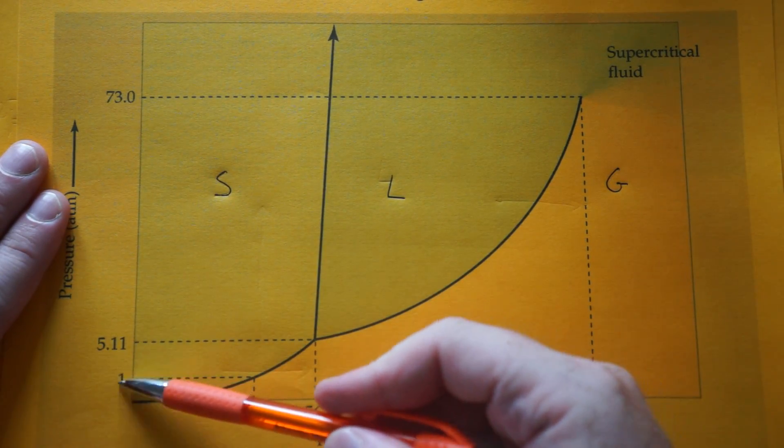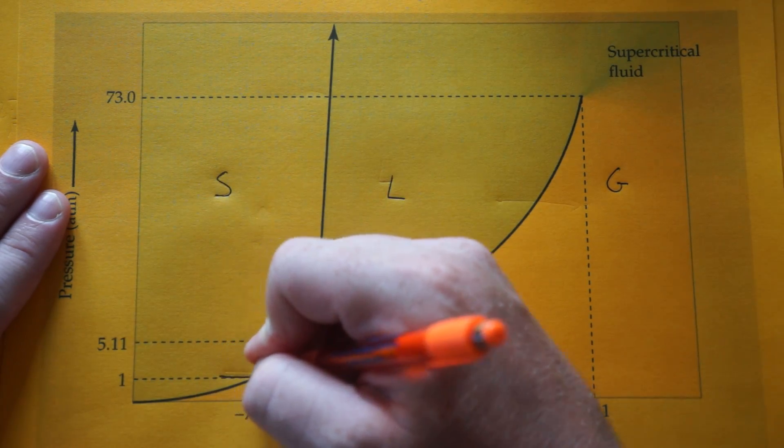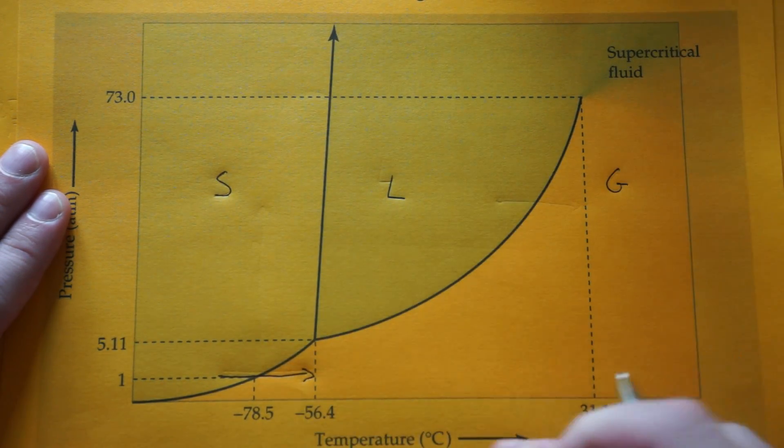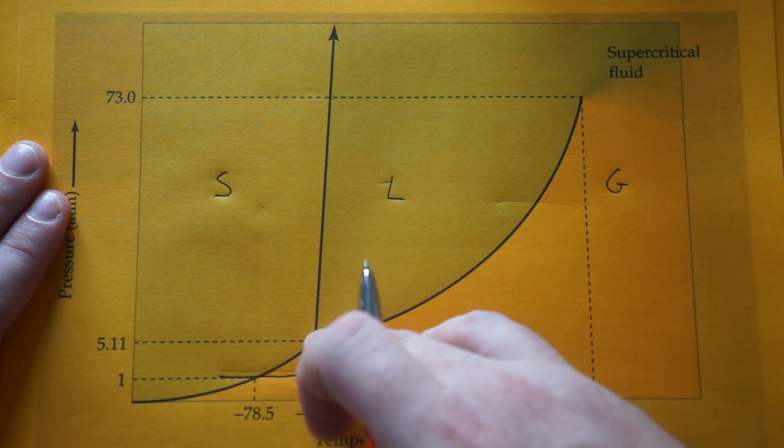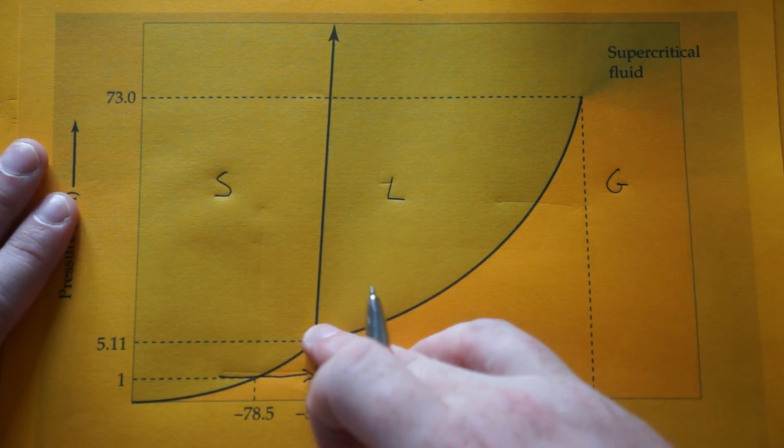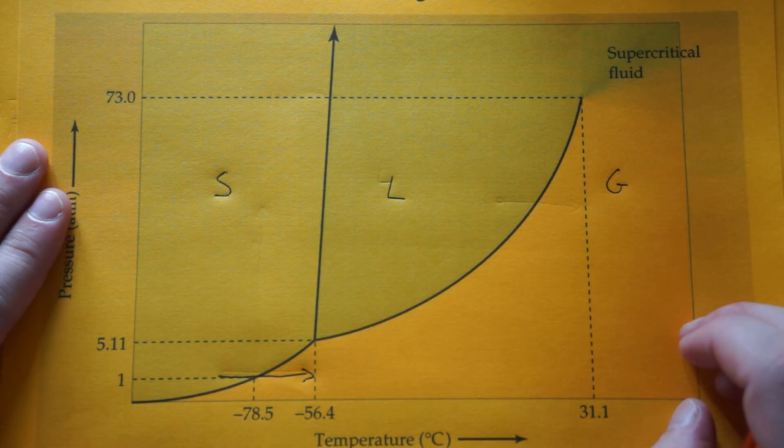What's interesting, at one atmosphere, there's no such thing as liquid CO2. CO2 sublimates. It's not until you get to 5.11 atmospheres, where the triple point exists, that you first have liquid CO2.